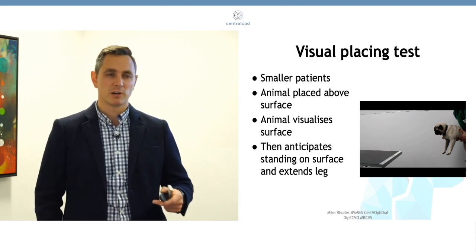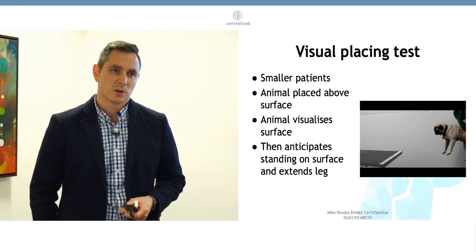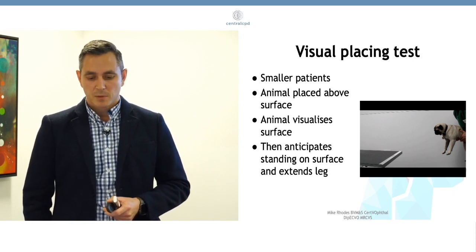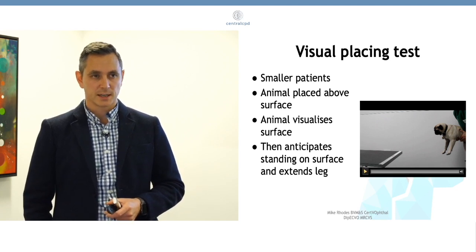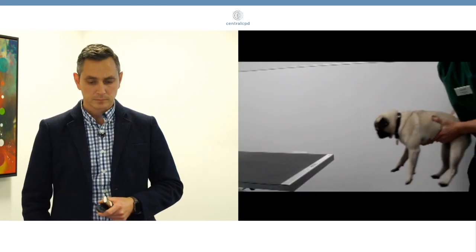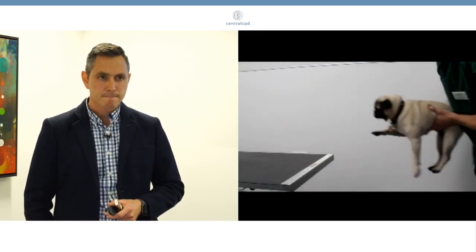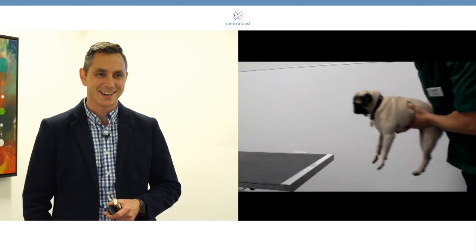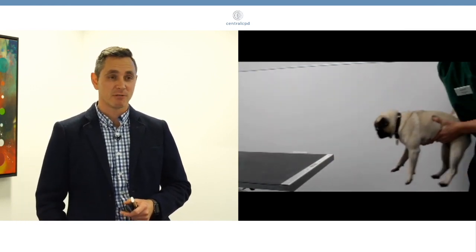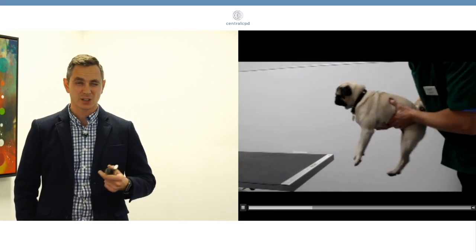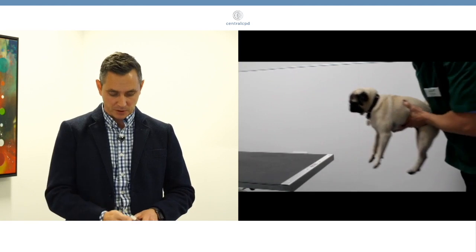It doesn't always work. If the animal's really nervous, cats, it can be quite difficult, because cats just don't do what you want them to do. But if we watch the video on this, this is a little pug who's very enthusiastic. It's quite good, isn't it? He sort of does it automatically. That's a really nice test to do. If you're just not sure, it's not really menacing, it's a small animal, you can have a go at picking it up and doing that.